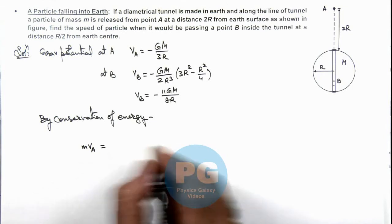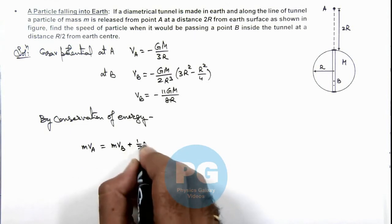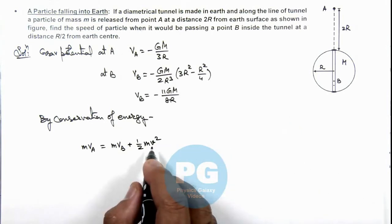And at point B its energy is mV_B plus half mv² where v is the speed of particle at point B.